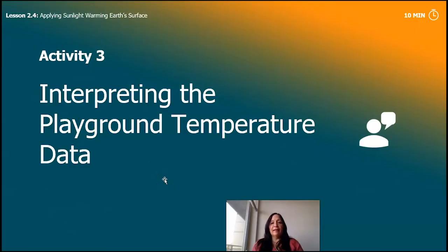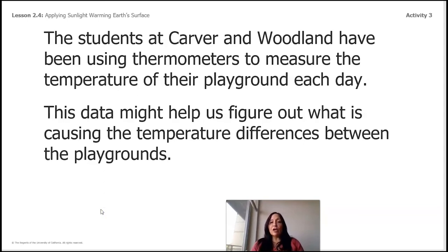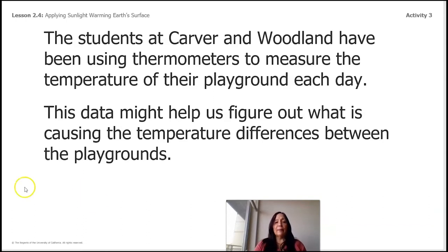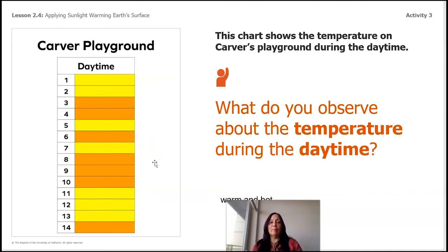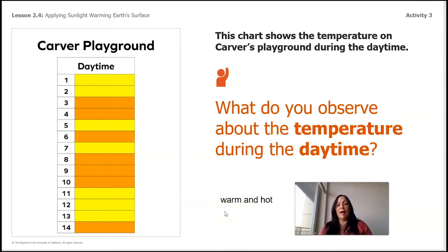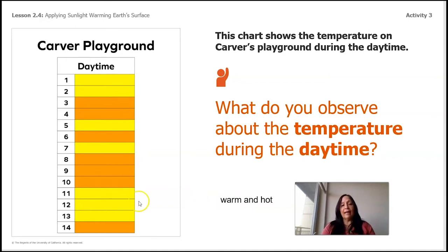Now we're going to interpret the playground temperature data. Remember, data is the information that we have and we record it. The students of Carver and Woodland have been using thermometers to measure the temperature of their playground each day. The data might help us figure out what is causing the temperature differences. This shows Carver's playground during the daytime — what do you observe about the temperature? It changes throughout the day, but it's either warm or hot all day.